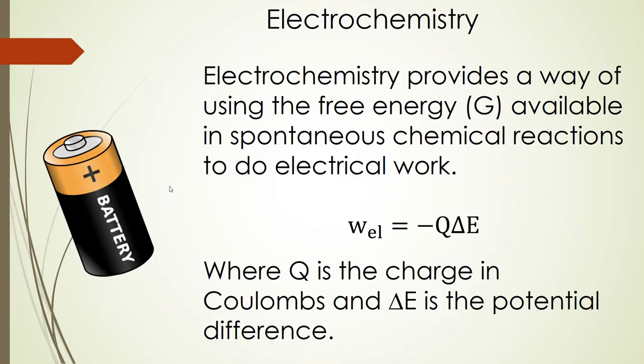Now electrochemistry is really important in that it provides a way to use the free energy in chemical reactions. Energy that is available in spontaneous chemical reactions is used to do electrical work and we can represent this work in terms of charge and cell potential. So Q is the charge transferred and ΔE is the potential difference between the two cells.